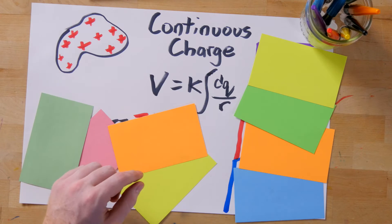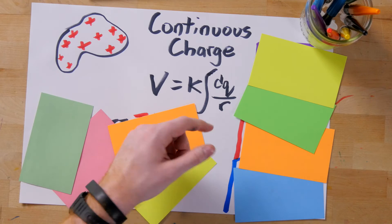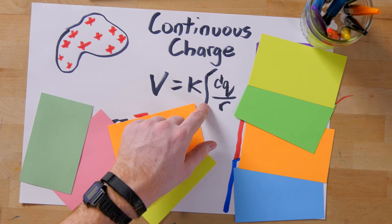Each small amount of charge, dq, will be at some variable distance r from our point. So instead of a summation, like we see in the superposition principle, we use an integral.